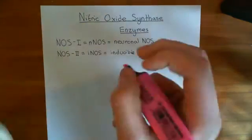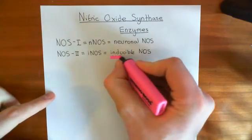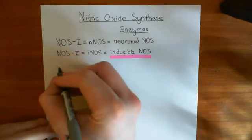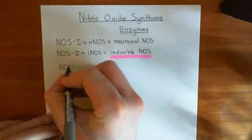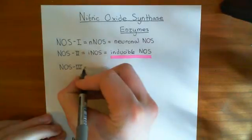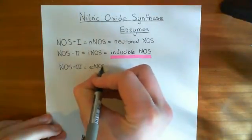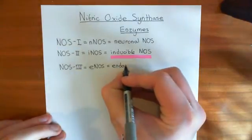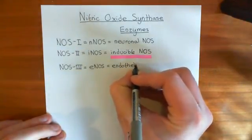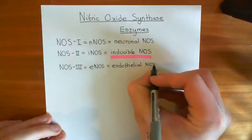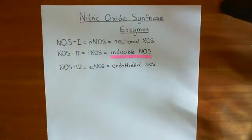NOS2 is involved in the inflammatory response and is turned on inside macrophages when they become activated. Then finally there is NOS3, also known as eNOS, which stands for endothelial NOS. It is constitutively expressed inside endothelial cells and is involved in endothelium-derived relaxation of the smooth muscle lining the endothelium of blood vessels.